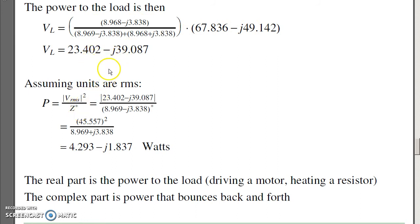The power is the magnitude of the voltage squared over Z. Assuming the units are RMS, that will be the magnitude of 23 minus j29 squared over the impedance, conjugate, which is 4.2 minus j1.8 watts. The real part is power to the load. The J term is power that's bouncing back and forth.